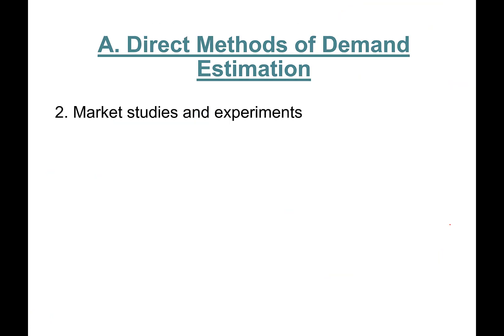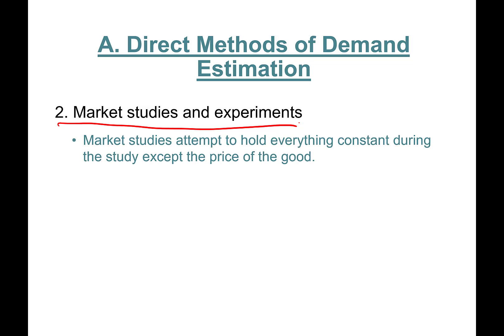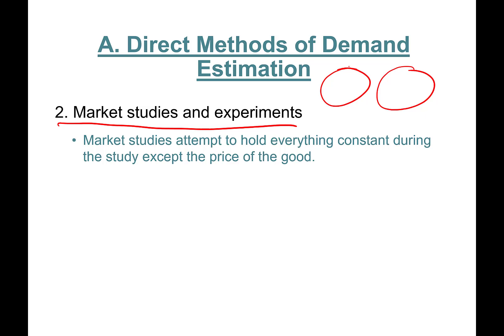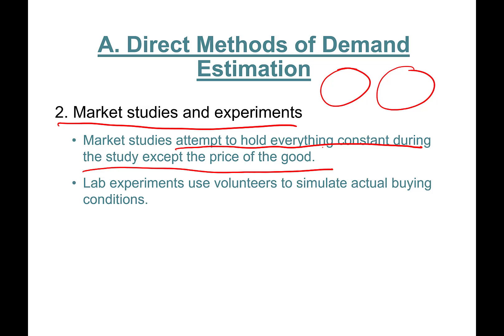The second direct method of demand estimation is market studies or experiments. These include direct questioning or experimentation. Market studies attempt to hold everything constant during the study except for the price of the good. Lab experiments use volunteers to simulate actual buying conditions. They put me in a lab and ask how much are you willing to pay for an avocado? I'm like, okay, I'd pay $1.50. What if the size is a little bigger? And so on.